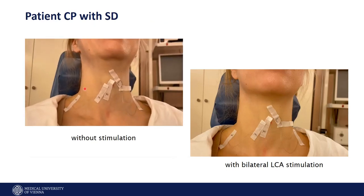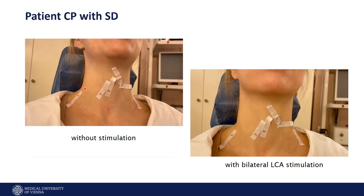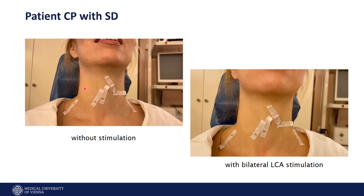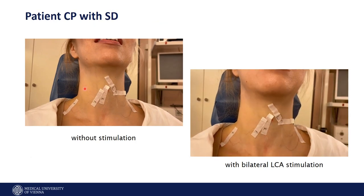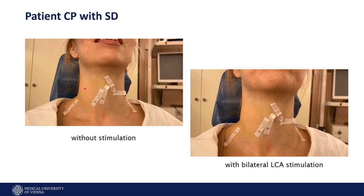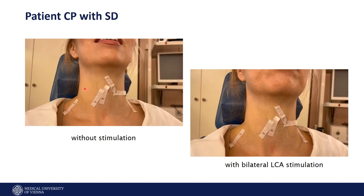Here we have inserted the hooked wires, and this is the patient for the stimulation. The patient says: 'Eifrig eilt ein Eichhörnchen einer einzelnen Eidechse hinterher.' We put the hooked wires there, then we try to find the amplitude for the best voicing, and then we do 30 minutes of stimulation — five consecutive days for one week — then one hour break, and then we repeat the voice measurements.